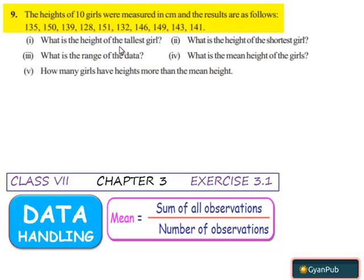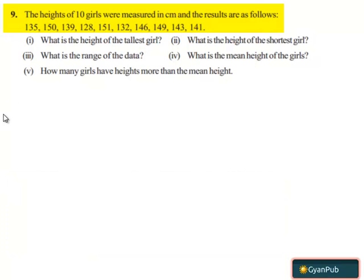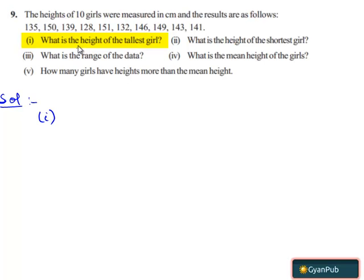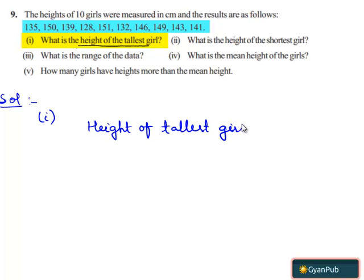In the first part, they have asked us to find the height of the tallest girl. Therefore, when we see the above heights of the 10 girls, we can find that the height of the tallest girl is equal to 151 cm.